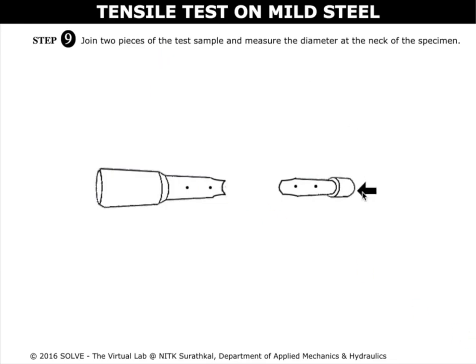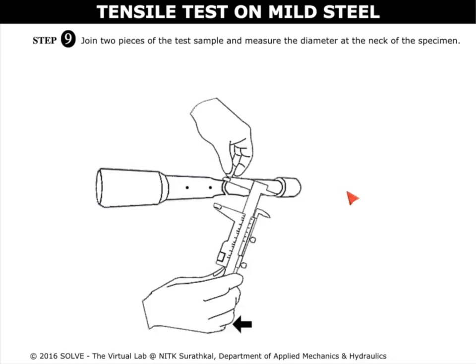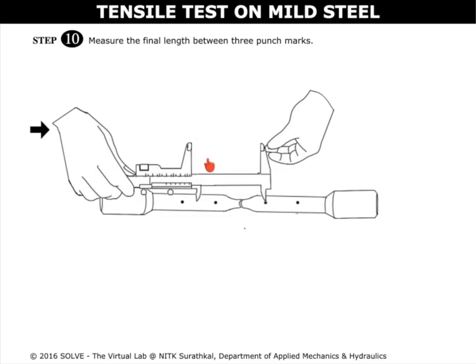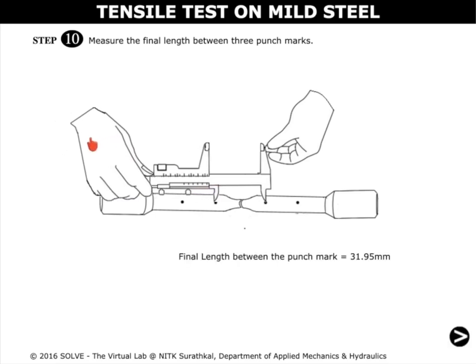Click here to join the two pieces of the test sample. Click on the vernier scale to measure the change in diameter at the neck of the specimen. Click on the vernier scale to measure the final length between the punch marks.